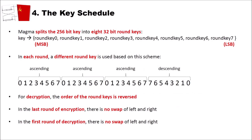Now that we know how Magma works as a Feistel cipher, we need the round keys, which are obtained using Magma's key schedule. Magma splits the 256-bit input key into 8 round keys of 32 bits each, indexed 0 through 7. Round key 0 corresponds to the most significant bit position of the key, and round key 7 to the least significant position — so the indices are effectively reversed.